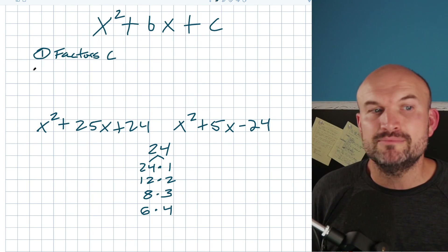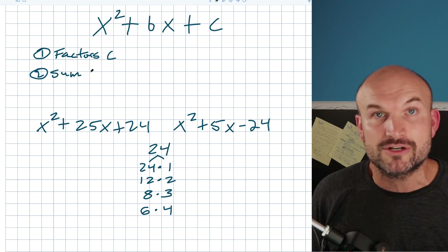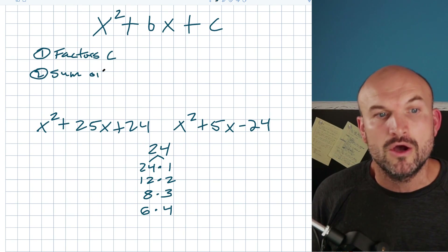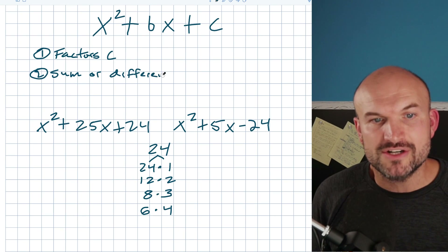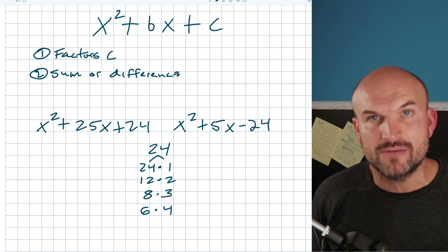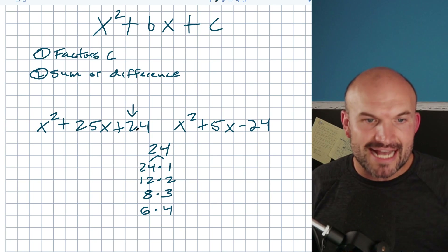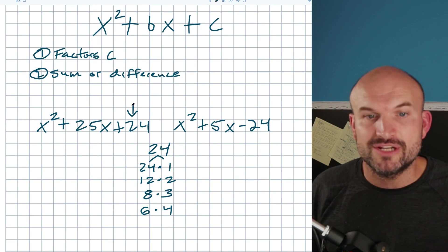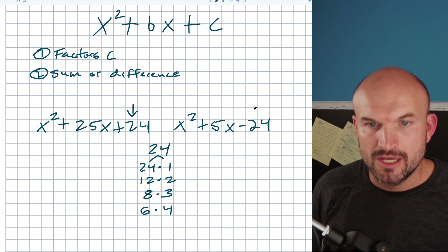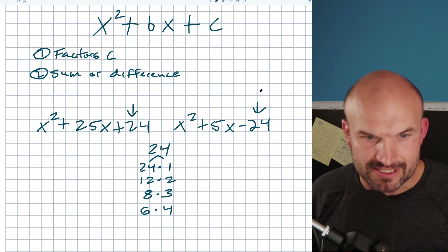Step 2 is to understand whether we're dealing with a sum or a difference. We determine this by looking at the last term. When the last term is positive, we're looking for a sum of our factors to get the middle term. When the last term is negative, we're looking for a difference.